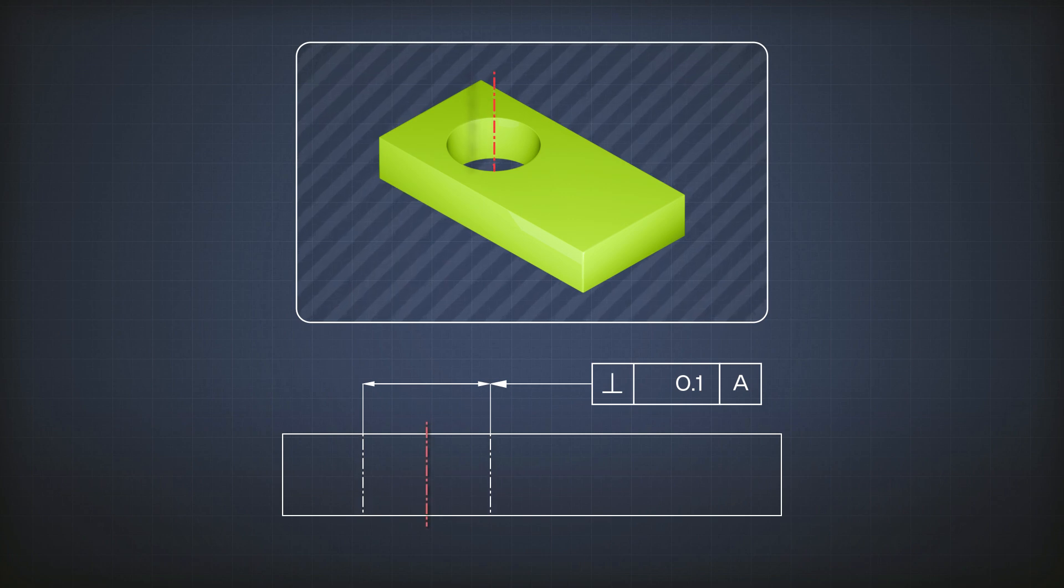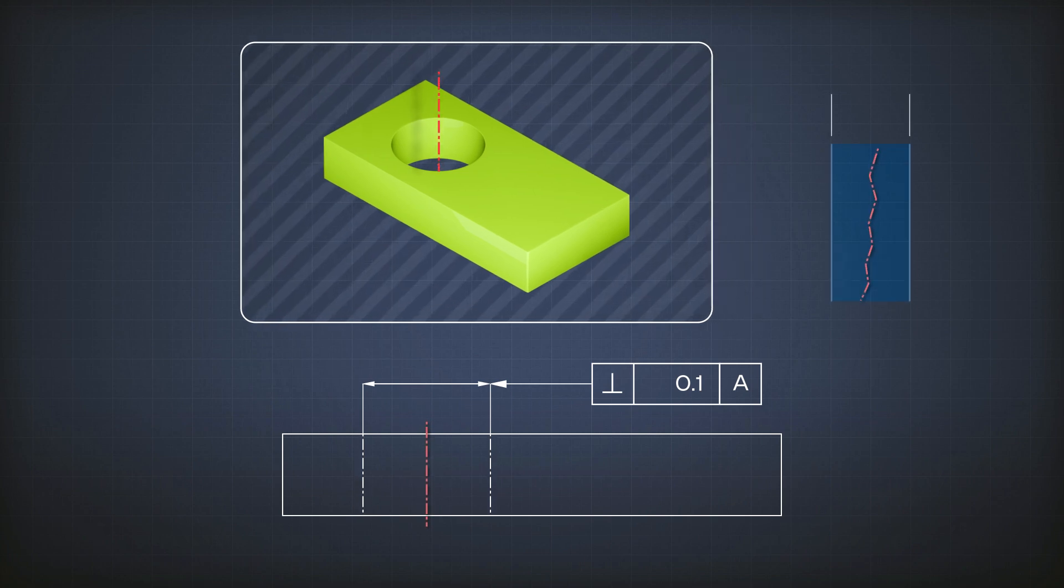I mean I want the centre line of this hole to be between two parallel planes, so only in the direction of the drawing it's perpendicular to A. I leave it like that.